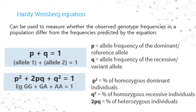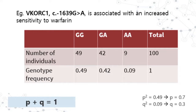The second equation is for genotype frequency. p-squared is the percentage of homozygous dominant individuals, q-squared is the percentage of homozygous recessive individuals, and 2pq is the percentage of heterozygous individuals. For example, if G is the dominant allele and A is the variant allele, GG — the homozygous dominant — is represented as p-squared in the equation.